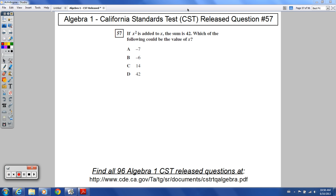Howdy there, welcome to Algebra 1 CST released question number 57. It says if x squared is added to x, the sum is 42. Which of the following could be the value of x?